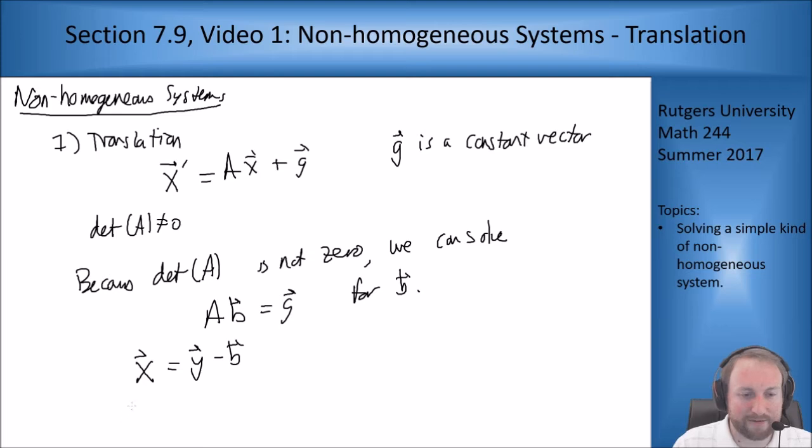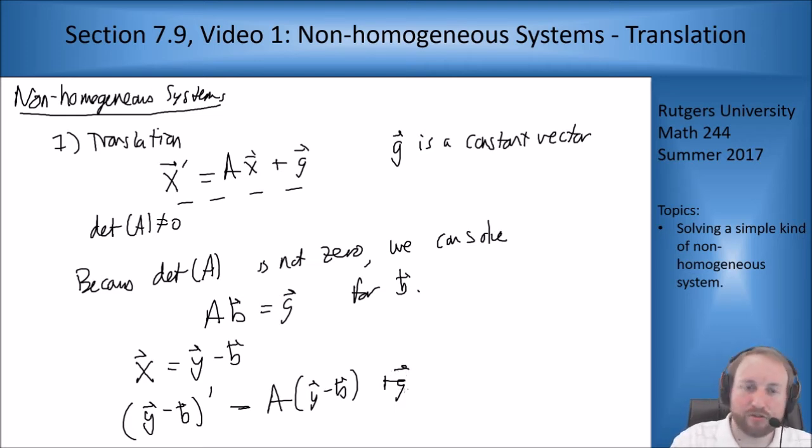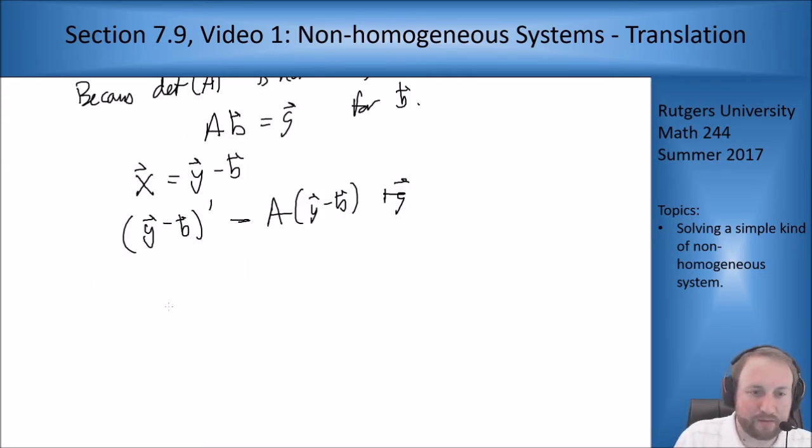I get my left hand side is y minus b prime. So I get y minus b prime equals a times y minus b plus g. But now b is a constant vector because g is constant so is b, so its derivative is zero. So the left hand side just becomes y prime and this equals ay minus ab plus g.